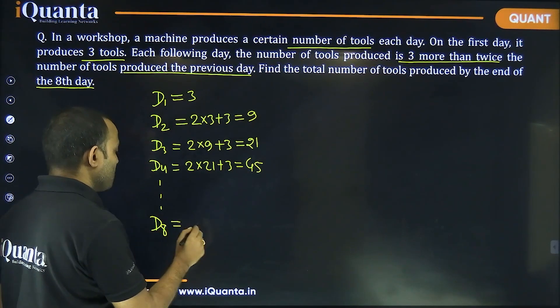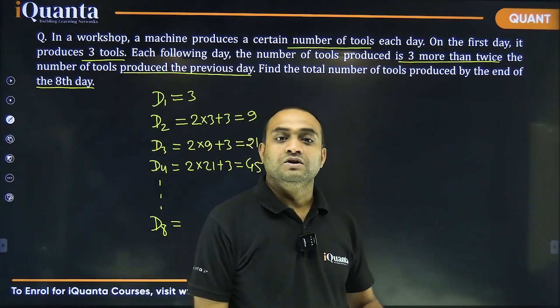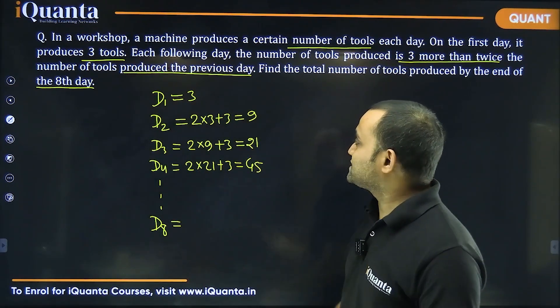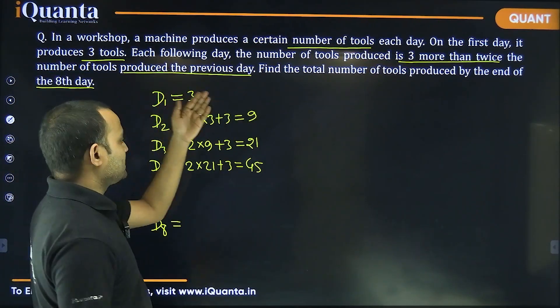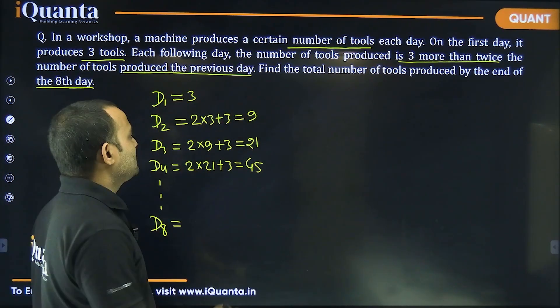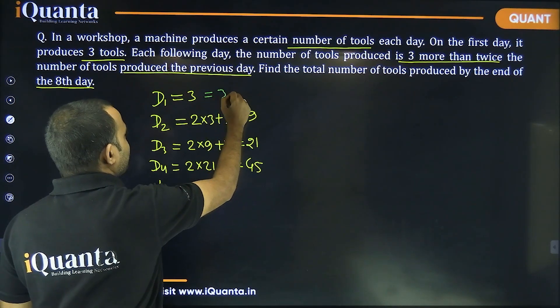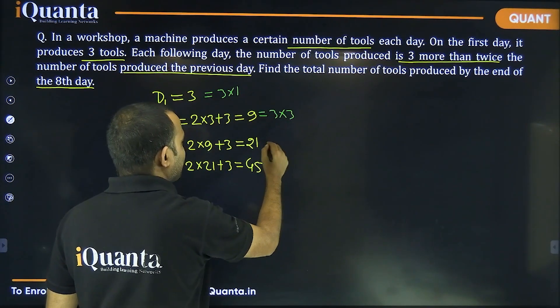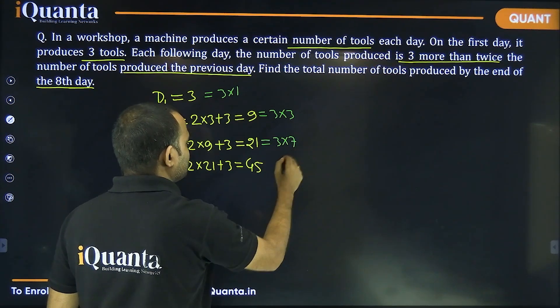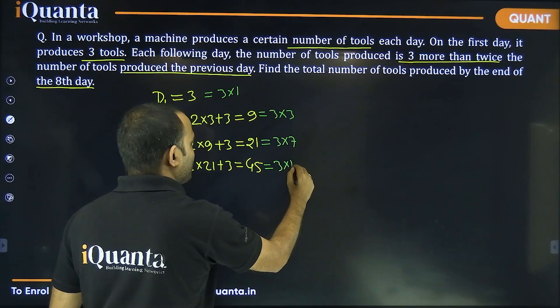On day eight, what will be the number of tools produced? So, for that, let's see if we are able to find any pattern here. So, three, nine, twenty one, forty five, let's try to write it as three into one. All of these are multiples of three. So, if we write them as multiples of three, we might get something out of it.